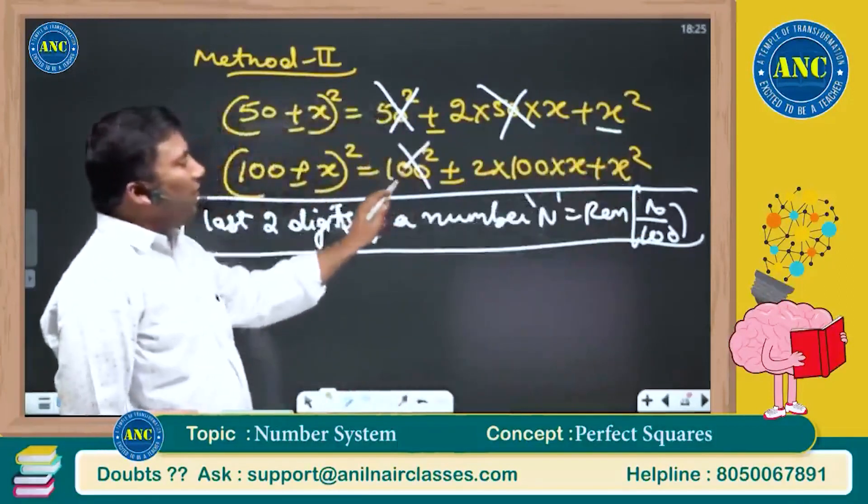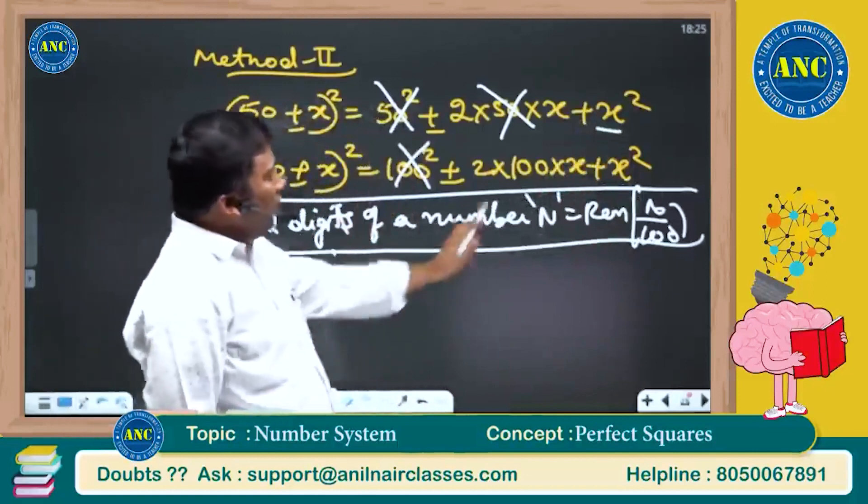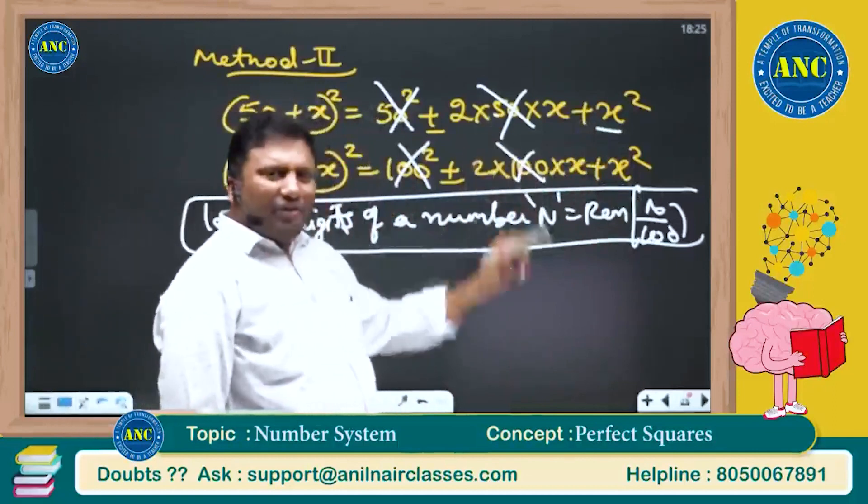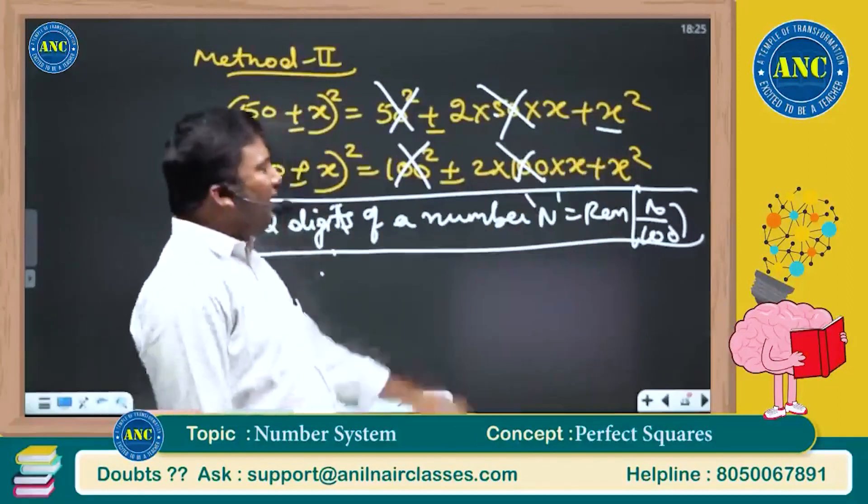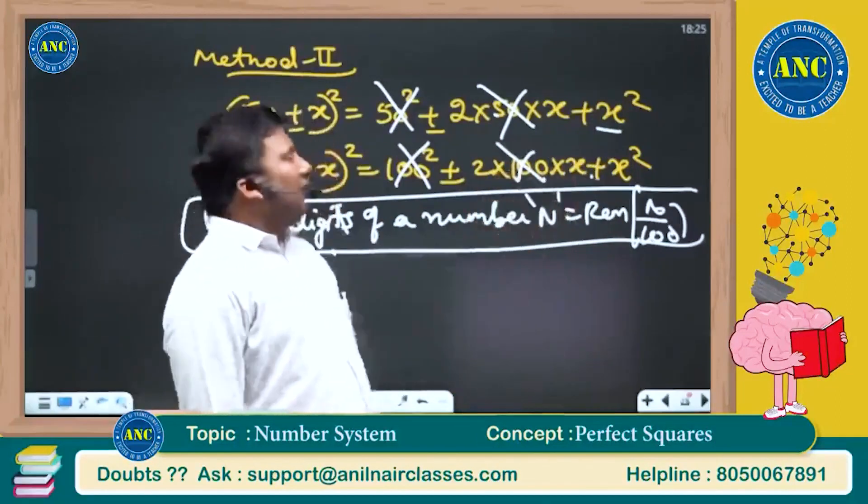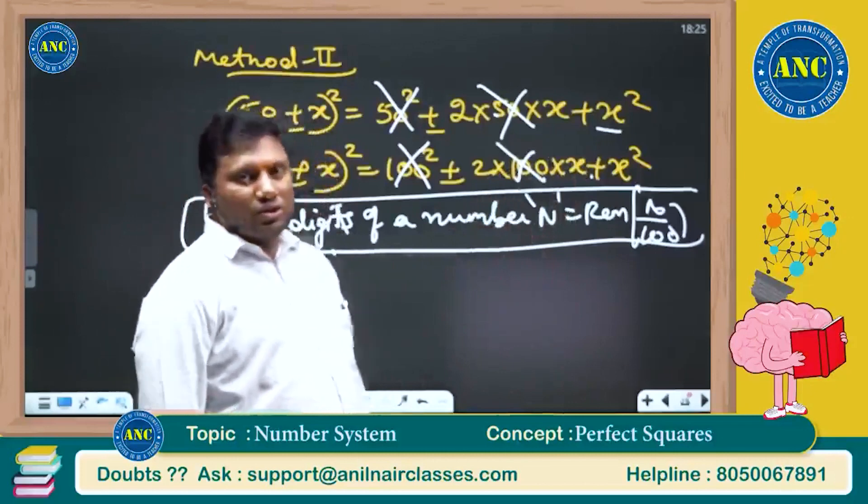What is left over? x square. 100 square, perfectly divisible. If it is working for 50, obviously it should work for all the multiples of 50. These also perfectly divisible. What is remaining? x square.